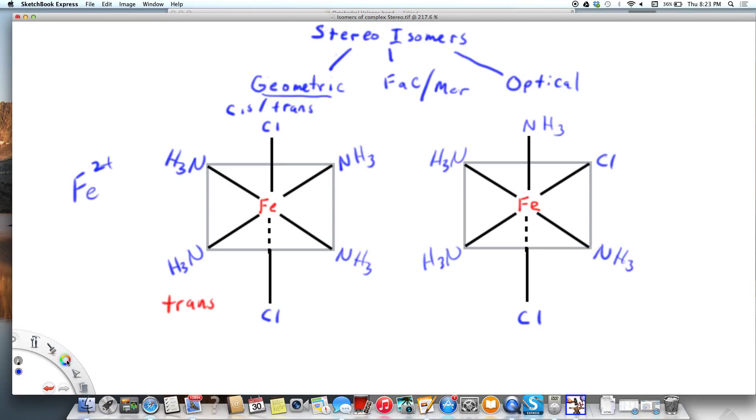Now these two isomers have a relation to each other. They are called diastereomers. So if I gave you this particular species and said draw the diastereomer of it, you would draw this one.